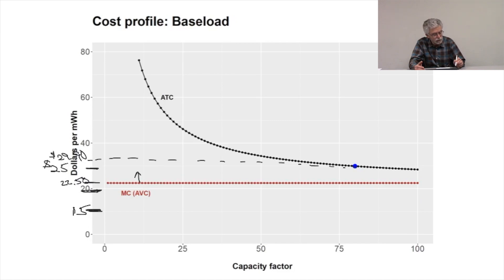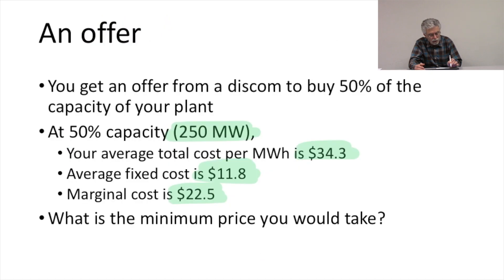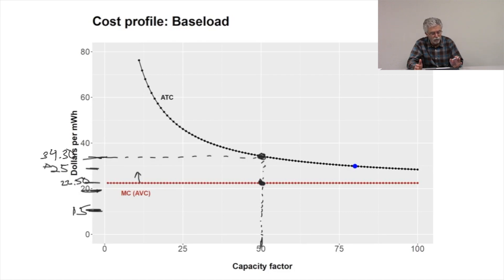I need to clarify: we're only contracting for 50%, so remember our marginal cost is $22.50, but our average total cost at 50% capacity is $34.30. So we have an outstanding offer — the best we can do — of $25 per megawatt hour, where the variable costs are $22.50 but our long run average cost is $34.30. The question is: should we run the plant?